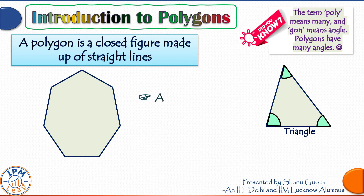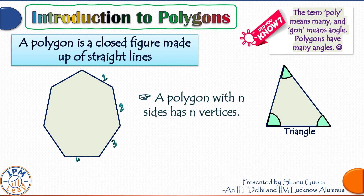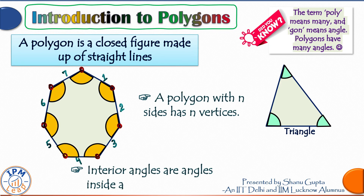A polygon with n sides has n vertices. So for this seven-sided polygon, if you count the vertices they would also be seven. At each of these vertices there is an angle sandwiched between the sides of the polygon, which brings me to the concept of interior angles. As the name suggests, interior angles are angles inside the closed figure — the yellow ones are all interior angles of this heptagon.